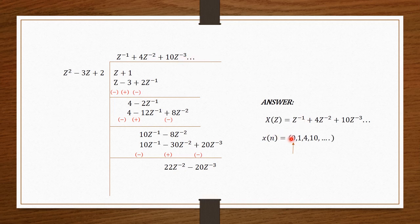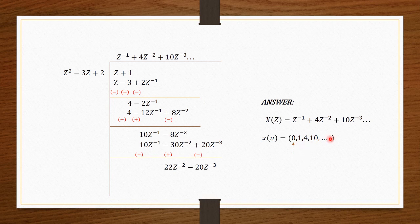So X of Z equals Z power minus 1 plus 4Z power minus 2 plus 10Z power minus 3. Since Z has negative powers, we get positive values of N. The arrow starts at N equals 0 with coefficient 0, then N equals 1 is 1, N equals 2 is 4, N equals 3 is 10, and so on.